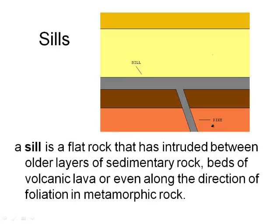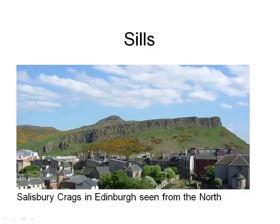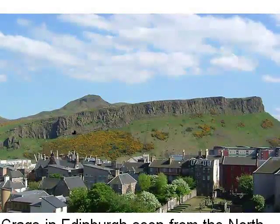Now a couple more words: sills. What is a sill? You've got a windowsill at your house — well, a sill in geology is like a windowsill but for rocks. You have an igneous rock intrusion where the igneous rocks came through another set of rocks and then flattened out — that's the sill. Specifically, it's a flat rock that has intruded between older layers of sedimentary rocks — this brown is sedimentary and so is this orange — and they move along the direction of foliation, meaning they form flat. That's what a sill is.